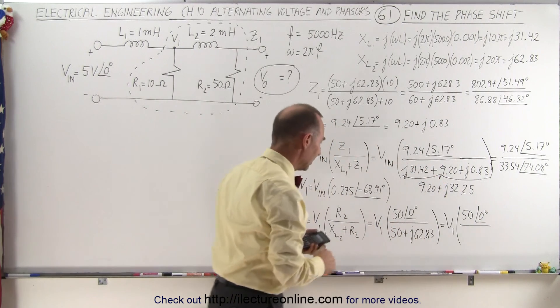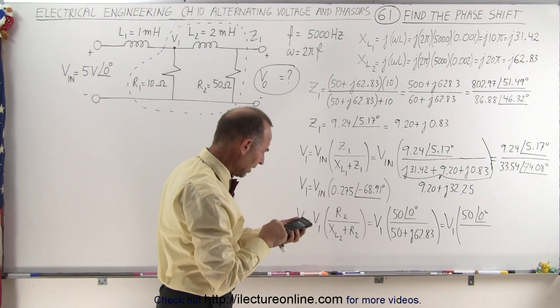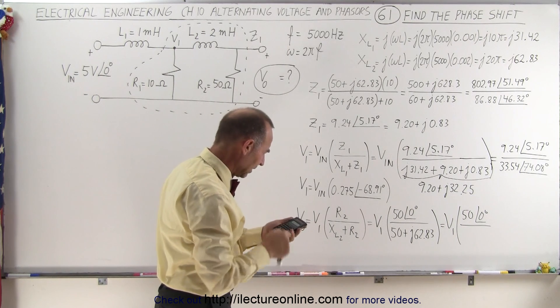Which equals V1 times 50 with a phase angle of 0 degrees, divided by the magnitude of that. 62.83 squared plus 2500, take the square root.